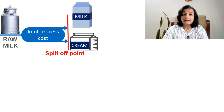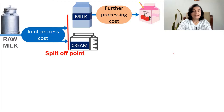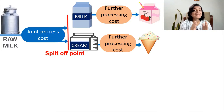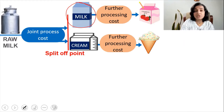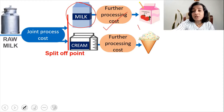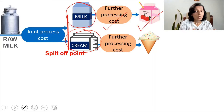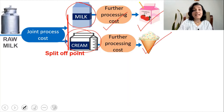For example, milk could be further processed into strawberry milk, and the cream could be further processed into ice cream. The question the company has to answer is: is it better to sell the milk as such, or to further process it into strawberry milk and then sell it? Likewise for cream — is it better to sell the cream as such, or to further process it and sell it as ice cream?